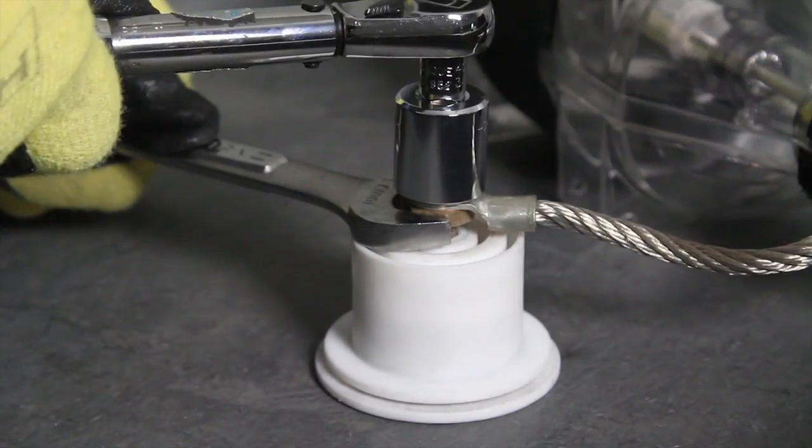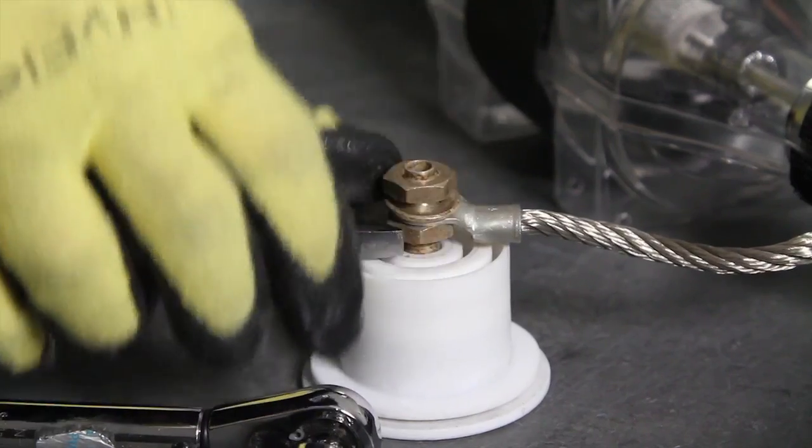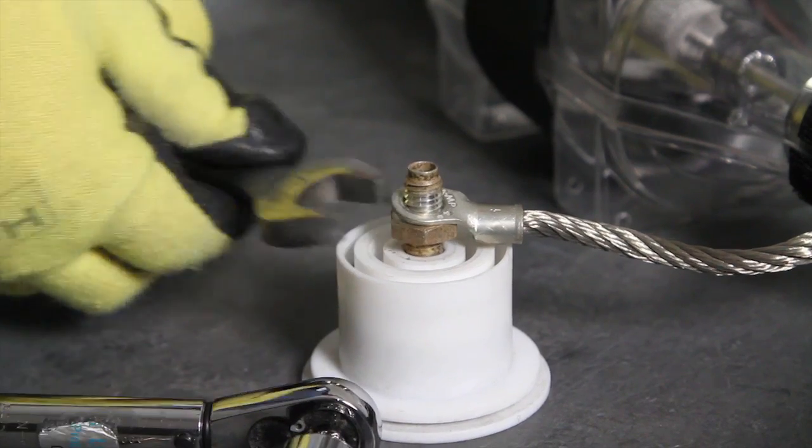Remove the insulator from the anode cable on the old lamp using a 17mm wrench and the 17mm socket. You'll later be attaching the insulator to the replacement lamp.